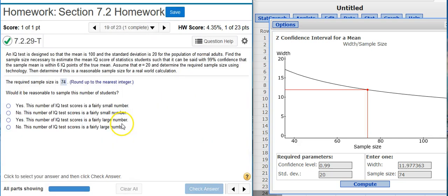And there's one more part to the problem, and it asks us, would it be reasonable to sample this number of students? Well, this is the minimum required, and it's not a very large number, so yeah, I mean, you could reasonably, one person could reasonably sample 74 people. So yeah, it's a fairly small number, should be pretty simple to get out. Fantastic!